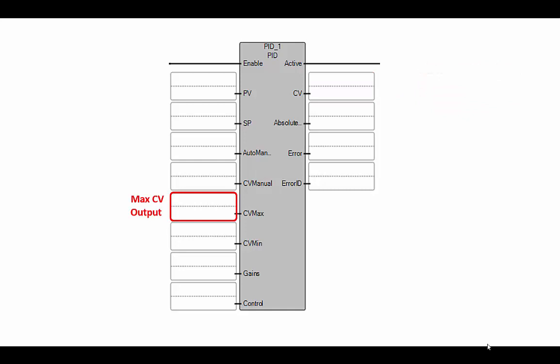The CVmax and CVmin provide limits to how high or low the control variable can get. So these should correlate to our 0 to 10 volt requirement for our fill valve.